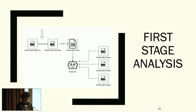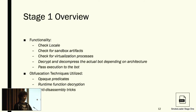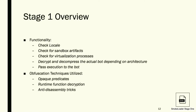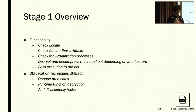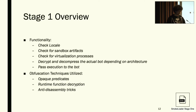Stage one is where all the interesting obfuscation lives. Its functionality is really just to check if the host is a viable victim: it checks the locale to ensure no Cyrillic keyboard, checks for sandbox artifacts, and checks for virtualization processes. If all checks pass, it decrypts and decompresses the actual bot. The main obfuscation techniques Smoke Loader uses are opaque predicates, runtime function decryption, and a slew of other anti-disassembly tricks.